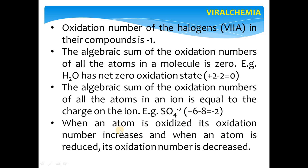When an atom is oxidized, its oxidation number increases, and when an atom is reduced, its oxidation number decreases. When an atom loses electrons, it is oxidized and its oxidation number increases — each electron lost adds +1. When an atom is reduced, it gains electrons and its oxidation number decreases. The English meaning helps: 'reduction' means to reduce/decrease, so the oxidation number decreases.